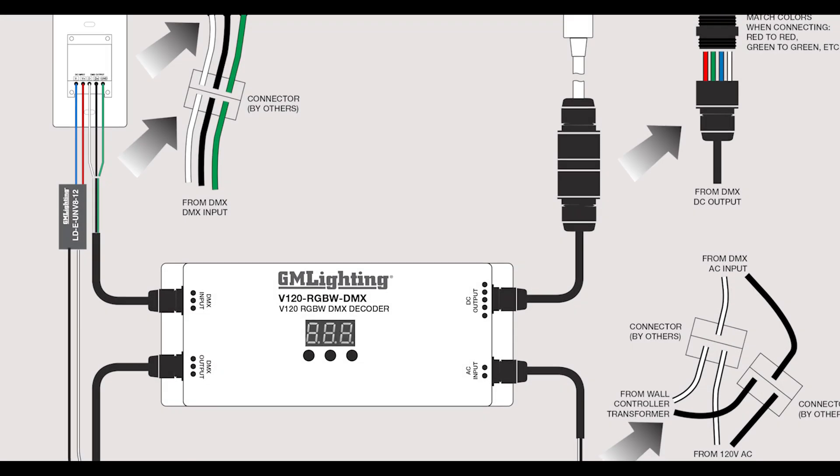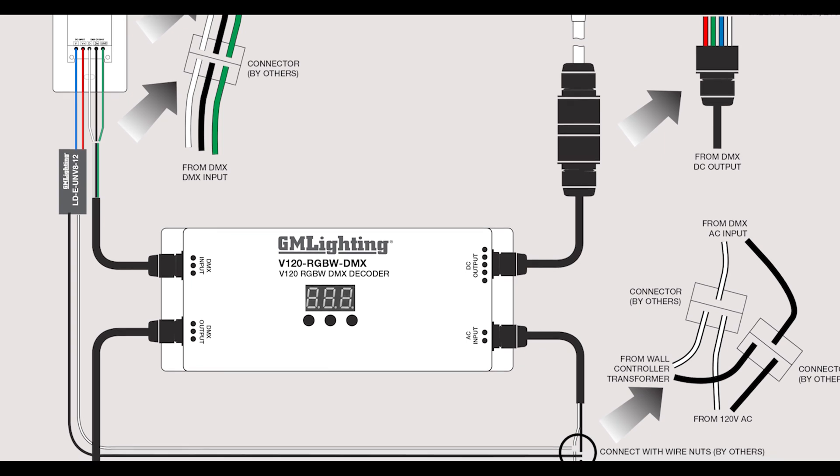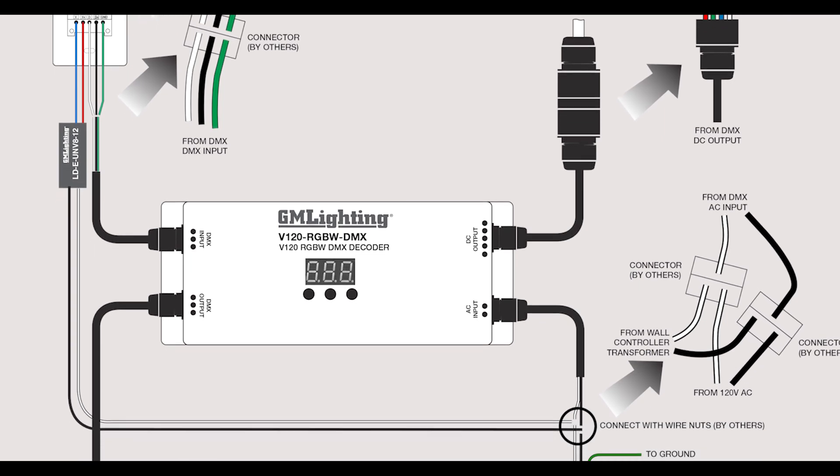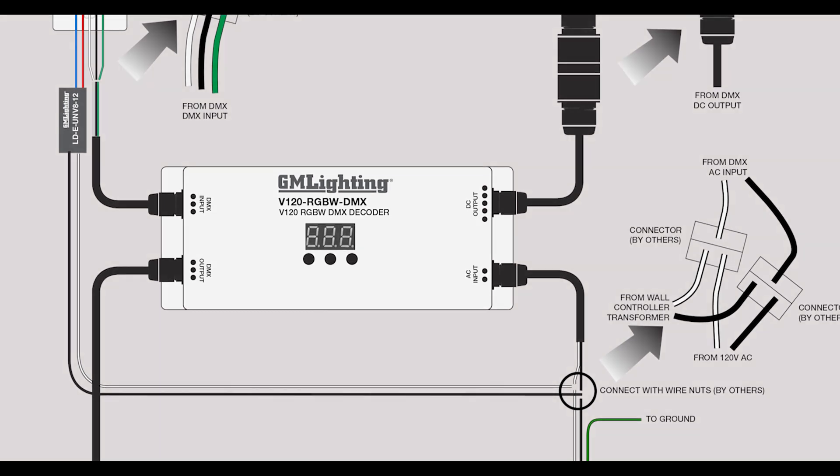That's all there is to it. Connect to 120 volt current and you're all set. Using the wall controller is intuitive. Consult the instructions that came with the wall controller to see all the ways that you can audition and program colors.